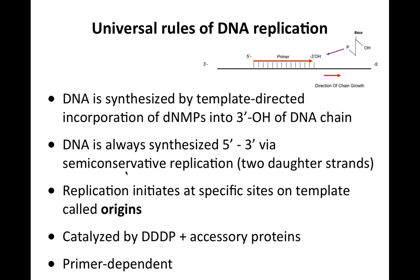DNA is always synthesized in a five-prime to three-prime direction via semi-conservative replication. We take a double-stranded DNA, separate the two strands, and each strand is copied once to make a daughter strand — that is semi-conservative replication. Replication always initiates at very specific sites on the template called origins of replication, and we will talk a lot more about origins this week. DNA synthesis is catalyzed by an enzyme called DNA-dependent DNA polymerase, DDDP. But it's not enough just to have a DNA polymerase — there are many other accessory proteins needed for DNA replication.